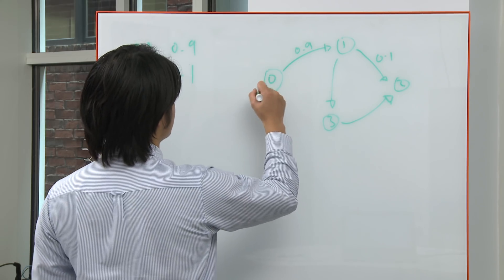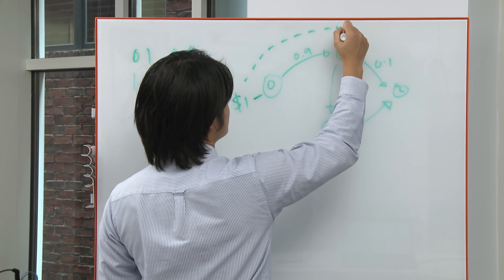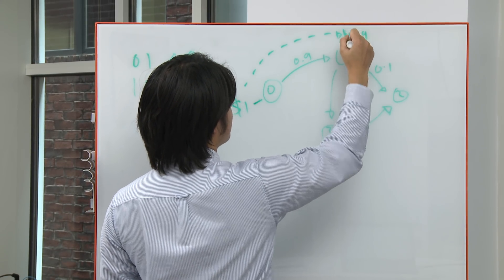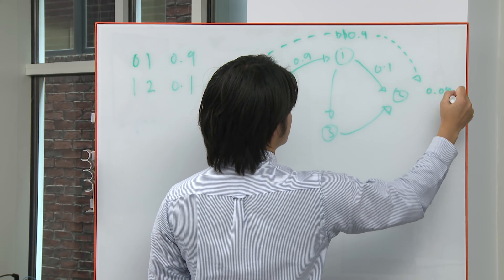So for instance, we can start with 1 of number 0, we can travel along this edge to make 0.9 of 1, travel along this next edge to make 0.09 of 2.